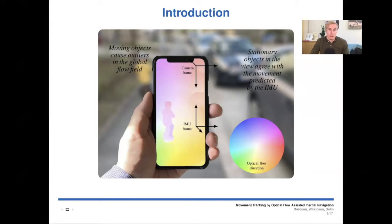In the optical flow, moving objects cause outliers in the global flow field, such as the child in the image, and stationary objects in the view agree with the movement predicted by the IMU.